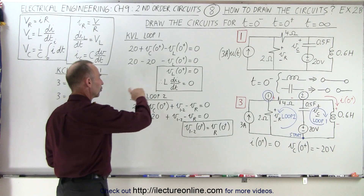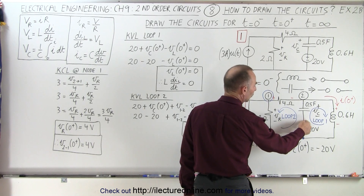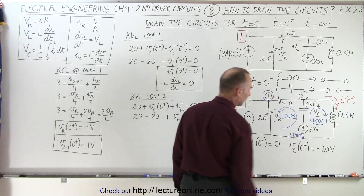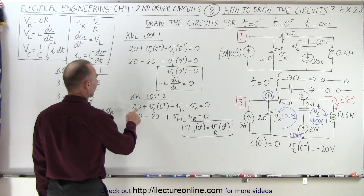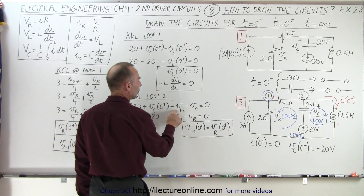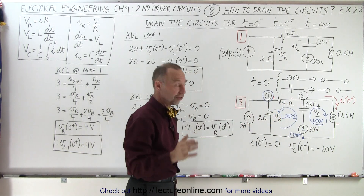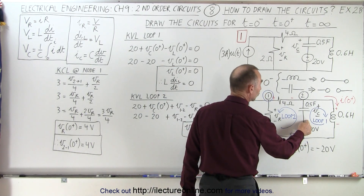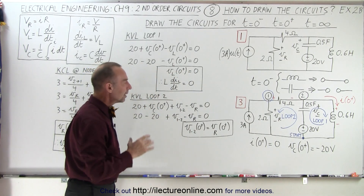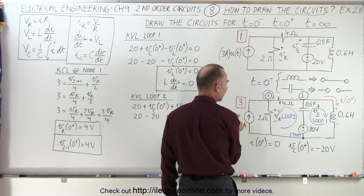Now we're going to sum the voltages across loop two. We're going to start at this point, across the source, across the capacitor, across this resistor, and across this resistor back to the start — four items to add up. We have a 20-volt rise across the source, a voltage across the capacitor, a voltage across the resistor, and a voltage across this resistor. We assume current is going to flow through the resistor in this direction, driven by the current source.